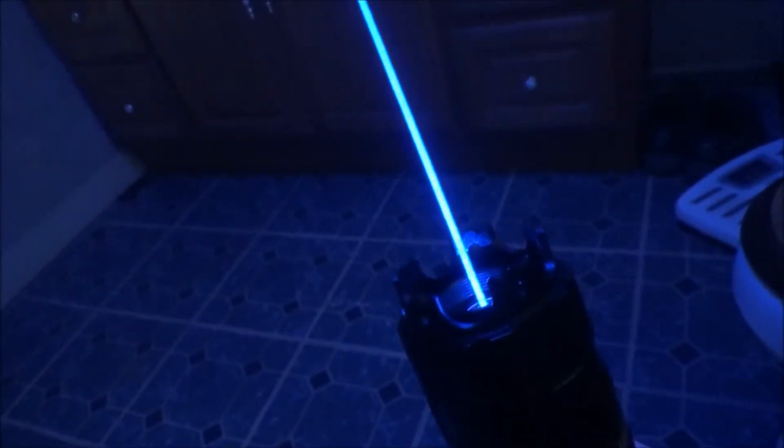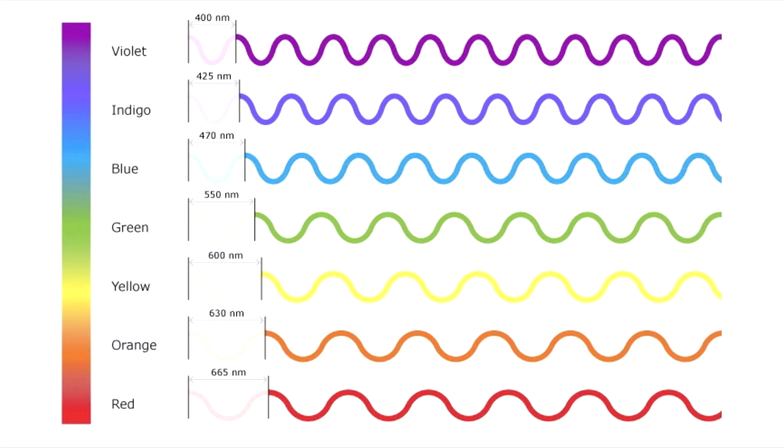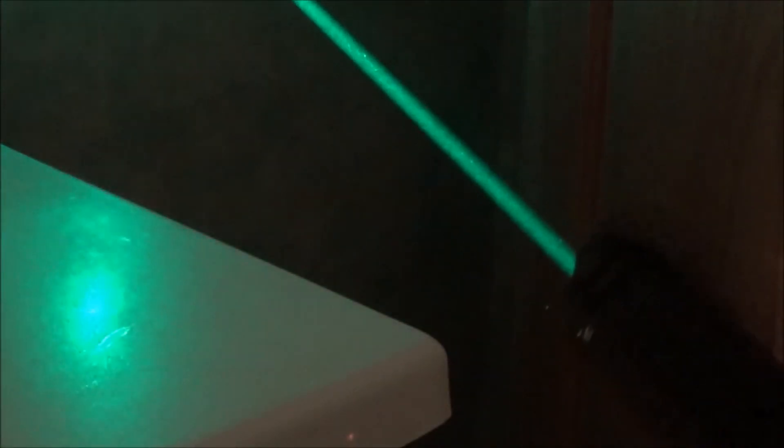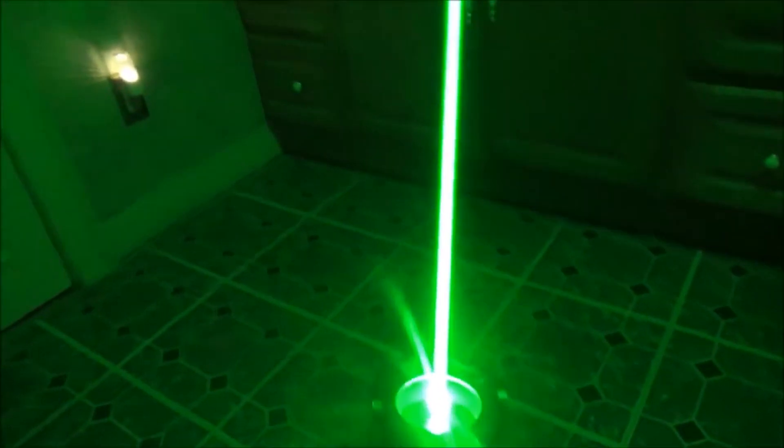And then as you continue to go up you have 473, 488 nanometer lasers that's more of a light sky blue. As we continue to climb, we're going to see lasers that are 515, 520 nanometers. These are more of a forest green color, and then you're going to see 532 nanometer which is more of a lime green color, and this makes up the majority of green lasers sold online.